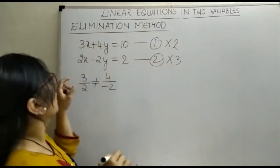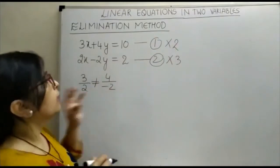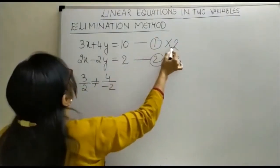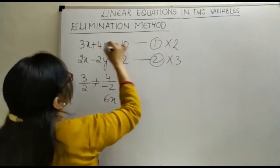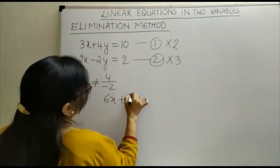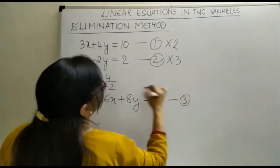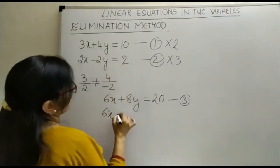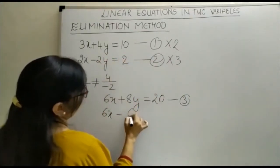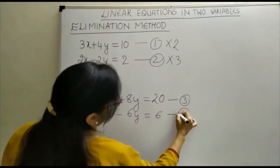Let us see the equation obtained. 2 times 3 is 6, so it is 6x plus 2 times 4 is 8y is equal to 20. This is equation number 3. Again, 3 times 2 is 6, 6x minus 3 times 2 is 6y is equal to 6. Let this be equation number 4.